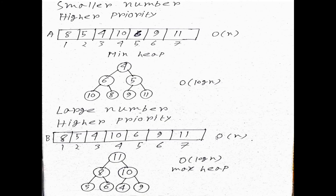Our target is to use a data structure that takes less time and is efficient. The advantage of using a heap is that it takes order of log N time — O(log n). So the time is reduced from O(n) to O(log n). That is why we use heap to represent the priority queue.